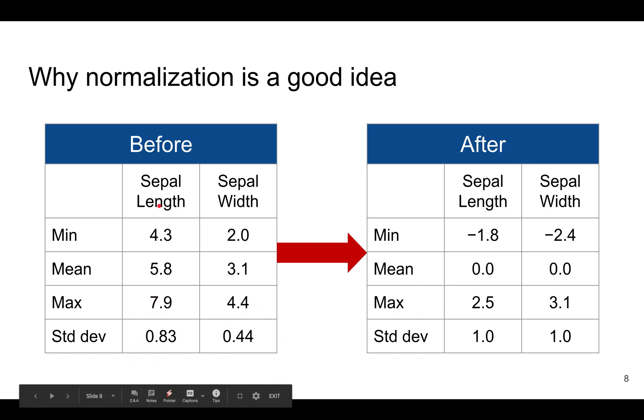Basically, sepals tend to be longer than they are wide, and there's more variation there. To give equal weight to sepal length and width, you can do normalization so that now the mean is zero and the standard deviation is one.